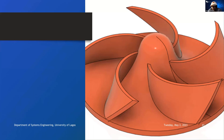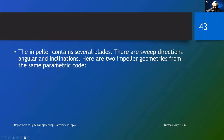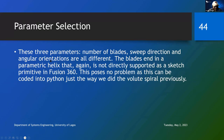I can do another impeller with 20 blades, and I can even do the impeller with straight edges by making the angle zero - the same code. You are beginning to see the power of parametrization. The impeller contains several blades. There are sweep directions, angular directions, and inclinations. Here are two impeller geometries from the same parametric code. These three parameters - number of blades, sweep direction, and angular orientations - are all different. The blade edges are a parametric helix, which is also not directly supported by a sketch primitive in Fusion 360. But we can write Python code to create anything we want.